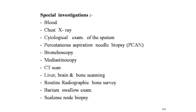Investigations for Pancoast tumor and lung carcinoma: blood eosinophilia, carcinoembryonic antigen (CEA), chest X-ray, cytological examination of sputum, percutaneous aspiration needle biopsy (for peripheral lung carcinomas), bronchoscopy (fundamental diagnostic technique), mediastinoscopy (routine practice once diagnosis is made — viewing mediastinal structures through a small incision in the suprasternal fossa), CT scan (for diagnosis and staging), liver/brain/bone scanning with technetium-labeled sulfur colloid to exclude distant metastasis, routine radiographic bone survey (occult skeletal metastasis seen in 21%), barium swallow to assess esophageal involvement, and scalene node biopsy.